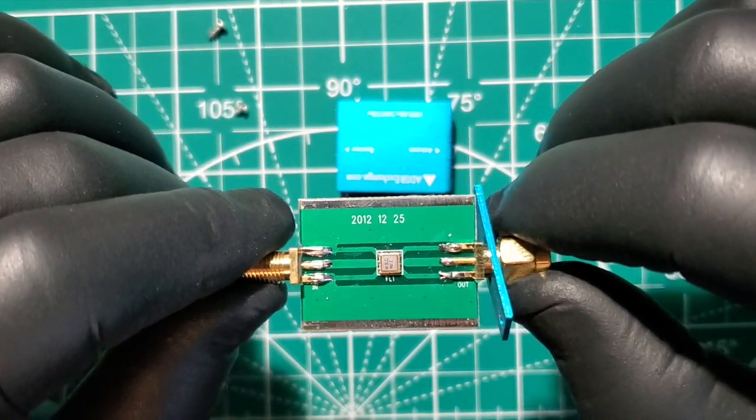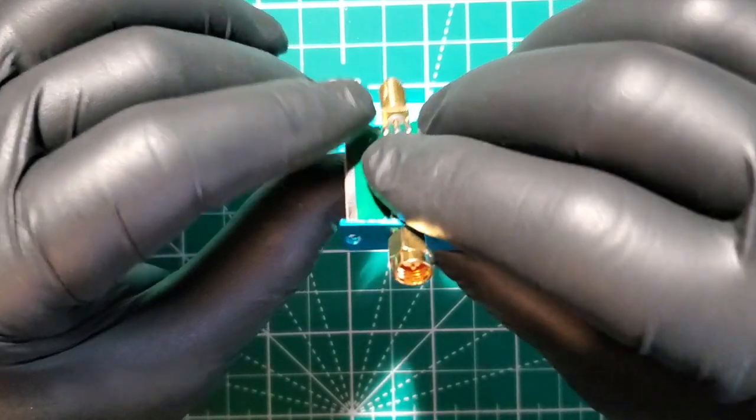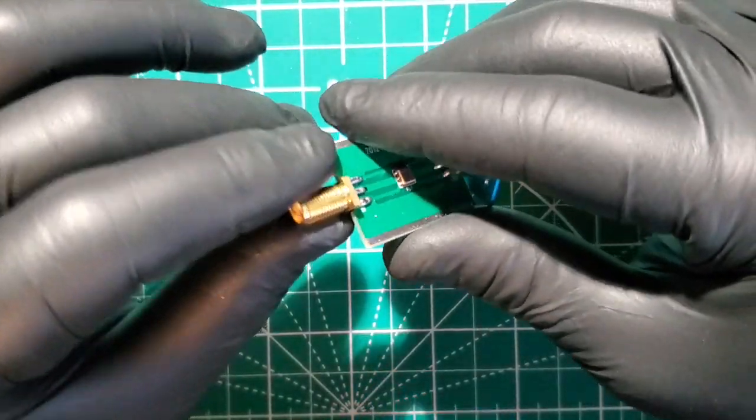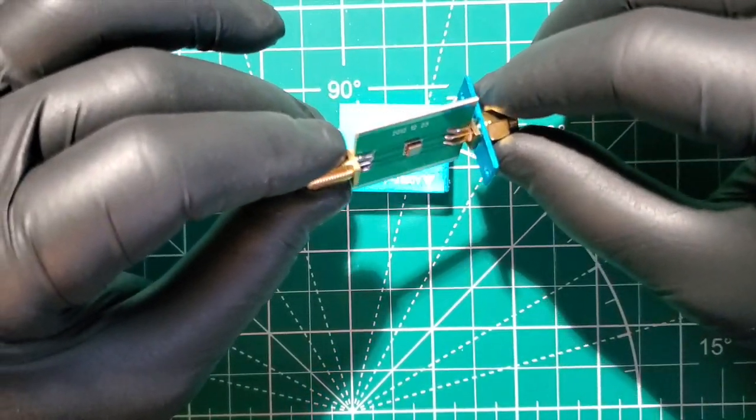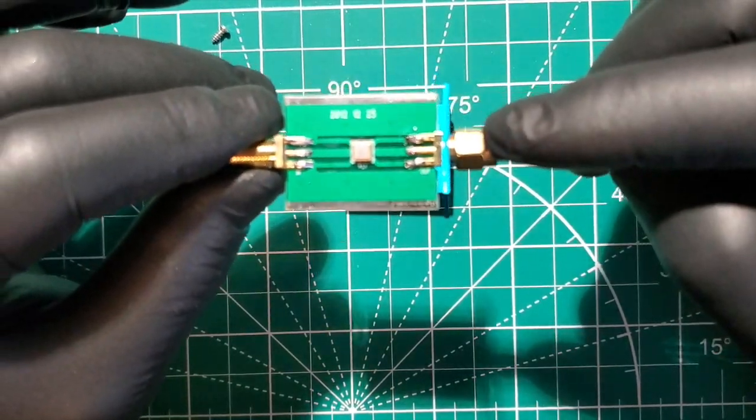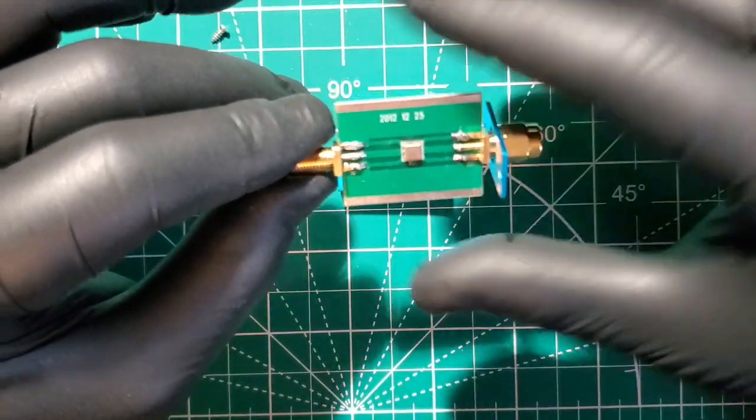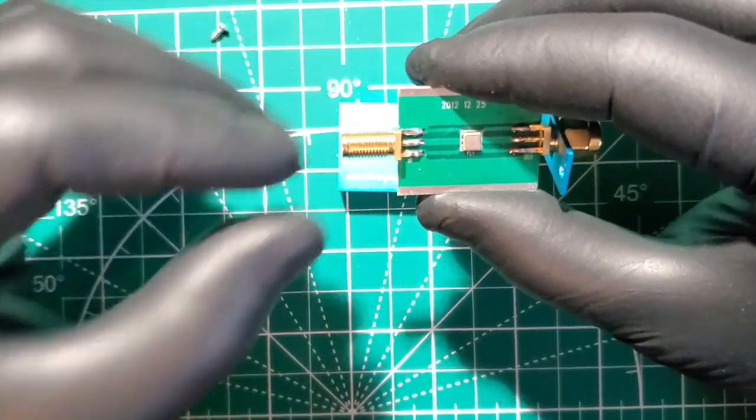There's what the top looks like. We have our SMA male and female connectors, which is kind of nice because we can screw this side right into the RTL and our antenna on this side.